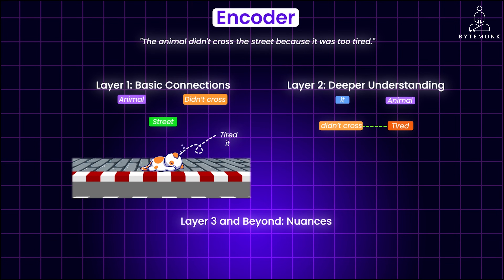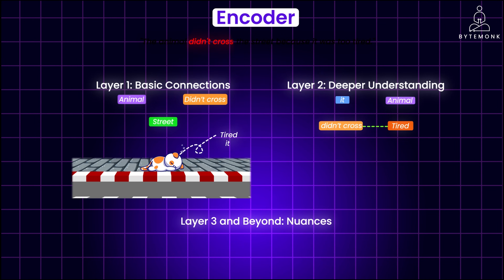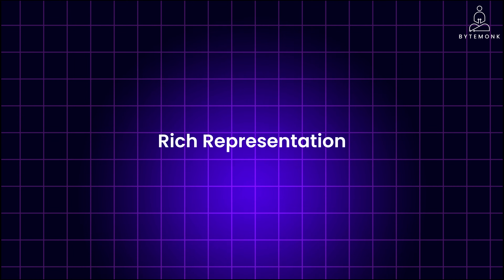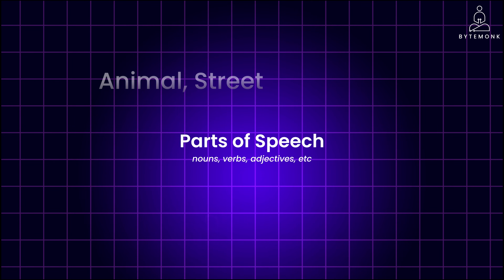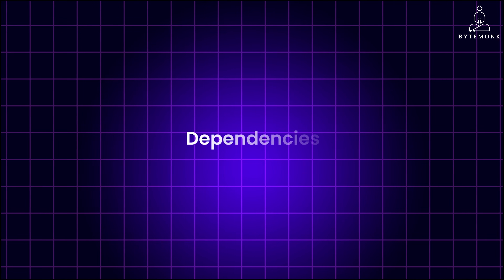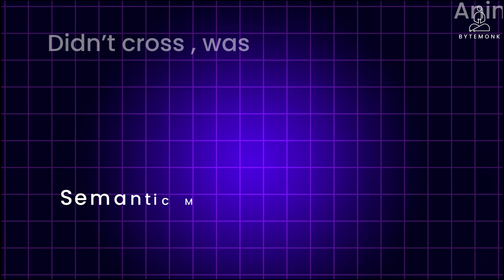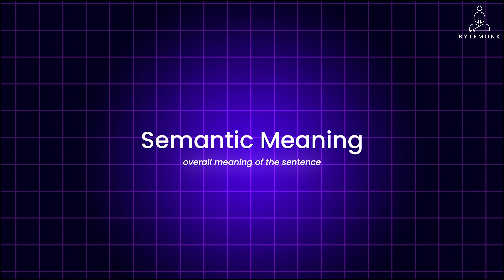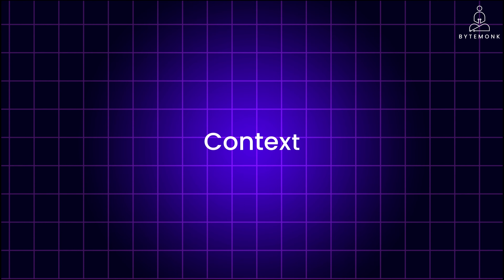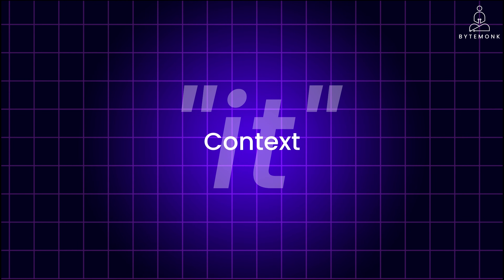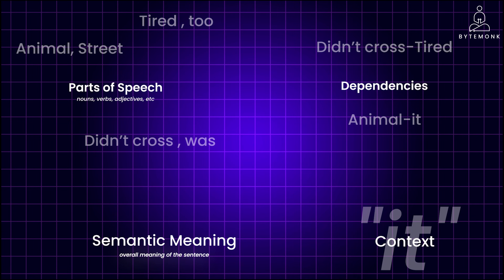In layer 3 and beyond, it gets more nuanced — understanding the negative sentiment of 'it didn't cross,' and identifying emphasis on the reason through words like 'because' and 'too.' By rich representation, it means the encoder generates an understanding that includes parts of speech such as nouns, verbs, and adjectives, how words relate within the sentence's structure, hints about the overall meaning — that the animal is not crossing the street due to fatigue — and the entire context resolving the ambiguity of what 'it' refers to.